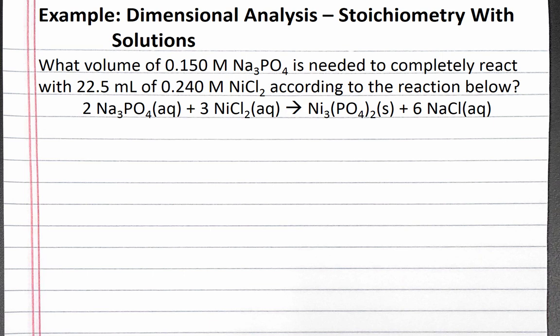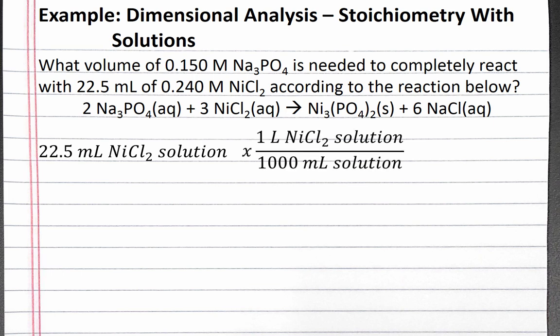We'll start our dimensional analysis with 22.5 milliliters of nickel chloride solution. We can convert from milliliters to liters of solution. Then we can use the molarity of nickel chloride to convert from liters of solution to moles of nickel chloride. We have 0.24 moles of nickel chloride in each liter of solution.